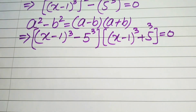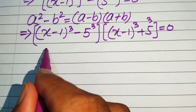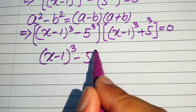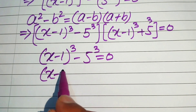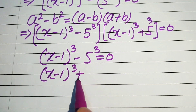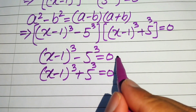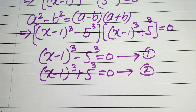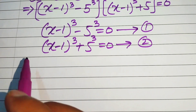We now split this into two cases. Equation 1 is (x minus 1) cubed minus 5 cubed equals 0, and Equation 2 is (x minus 1) cubed plus 5 cubed equals 0. We will solve these two equations separately to find all the values of x.